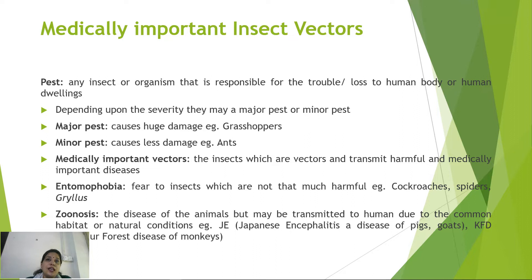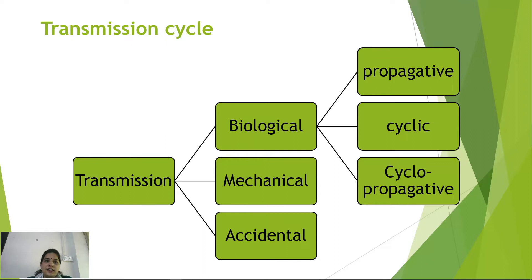Zoonosis refers to animal diseases that accidentally spread to human beings due to common dwellings or shared habitat. The transmission cycle is the cycle in which the pathogen completes its life cycle — either a sexual or asexual phase. The modes of transmission may be biological, mechanical, or accidental. In biological transmission, there are three types: propagative, cyclic, and cyclo-propagative.